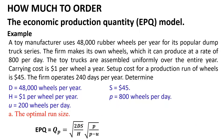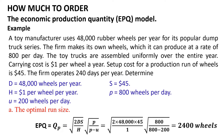For the first question, the optimal run size EPQ equals Q_p = √(2 × D × S / H) × √(p / (p − u)). Substituting the given values: Q_p = √(2 × 48,000 × 45 / 1) × √(800 / (800 − 200)).